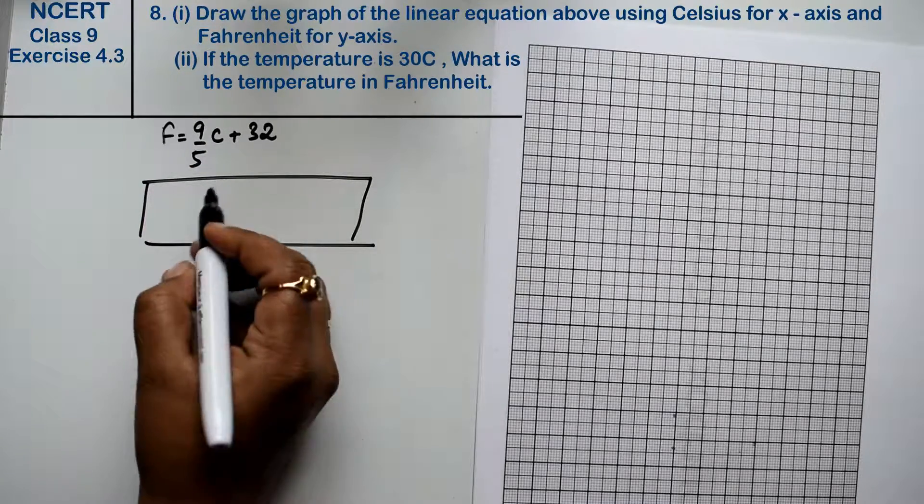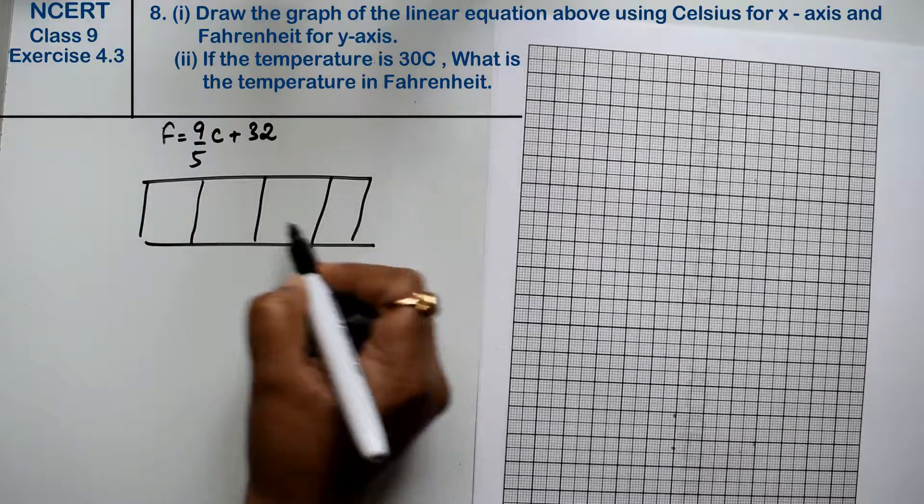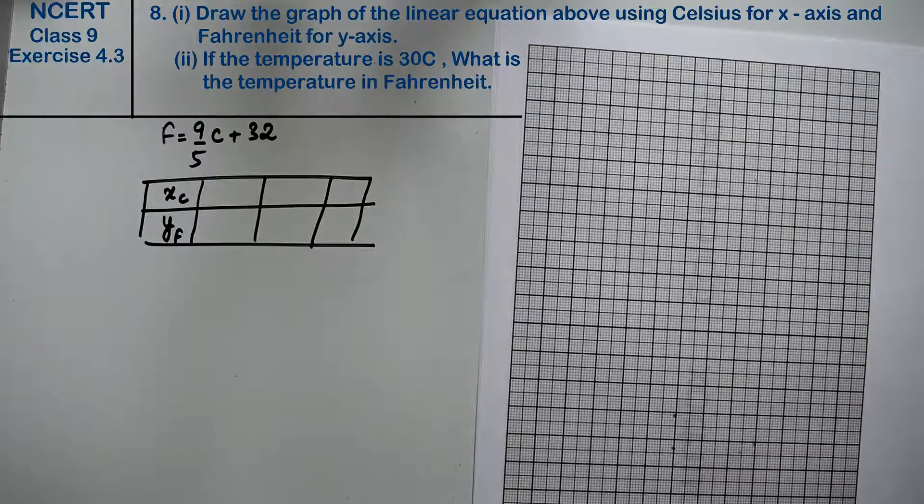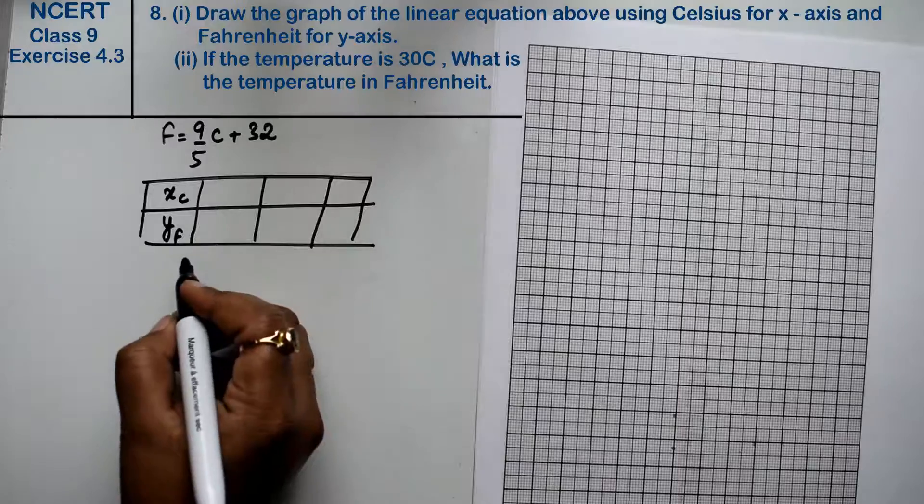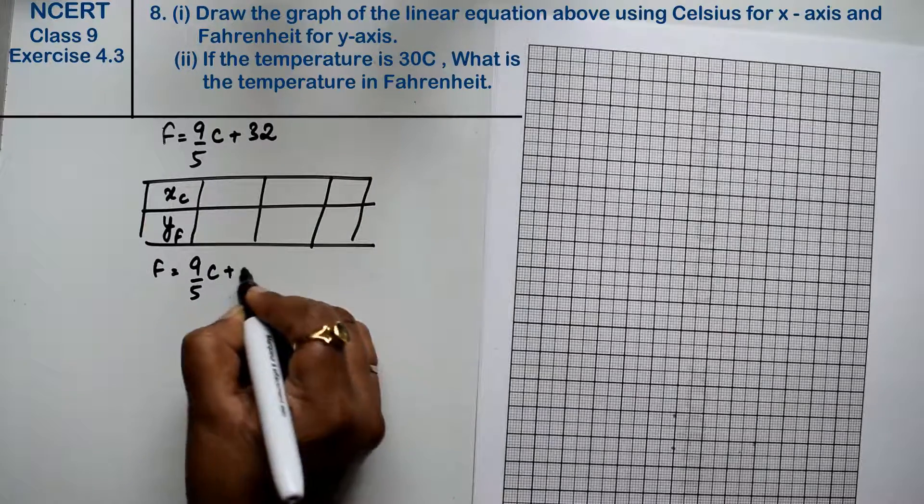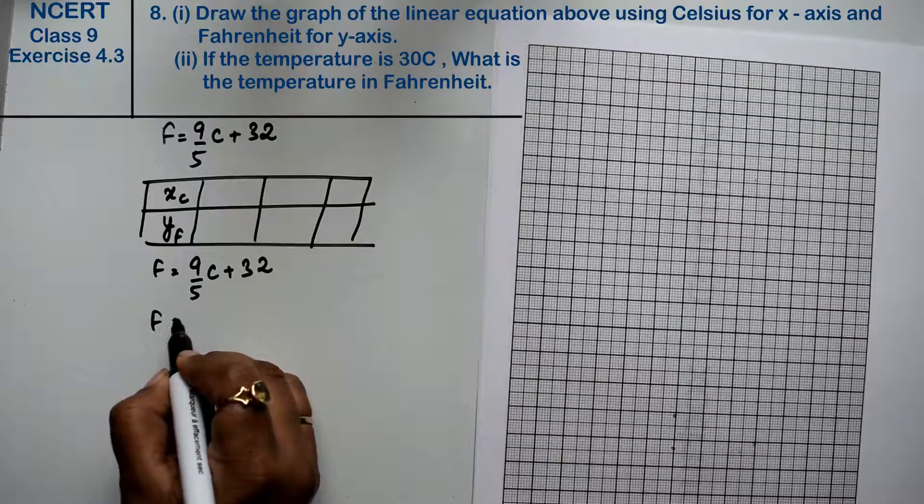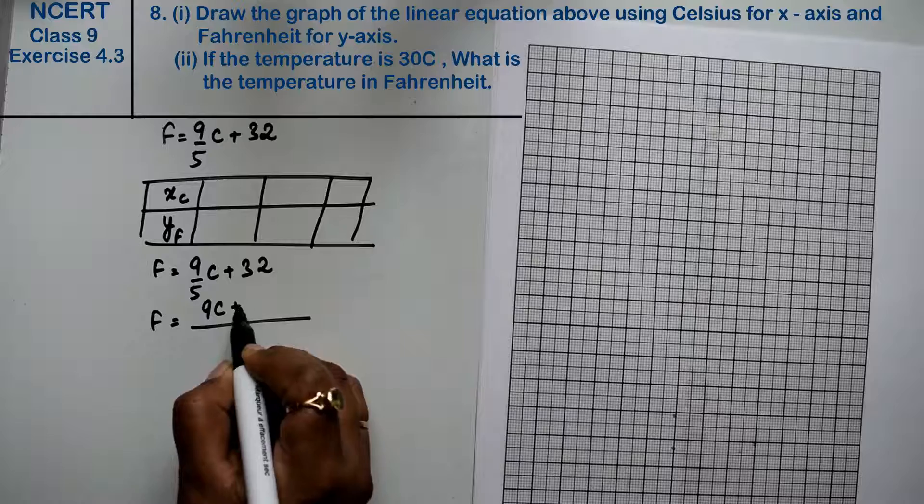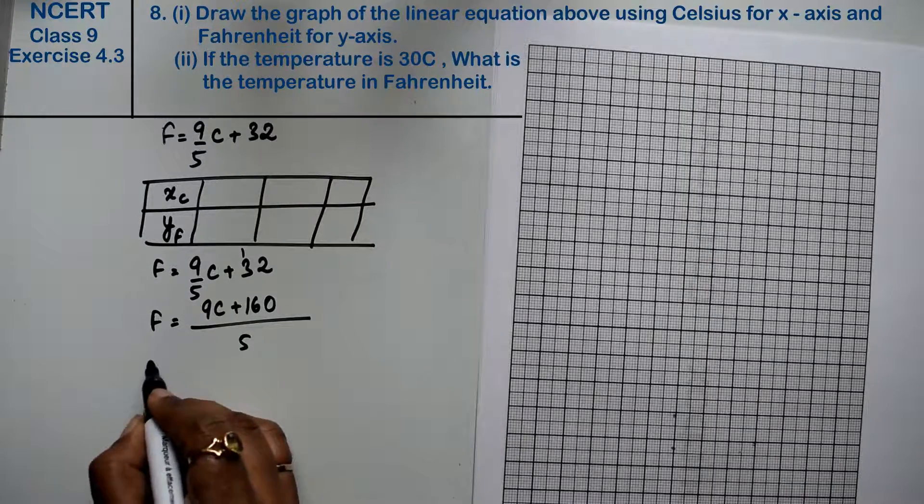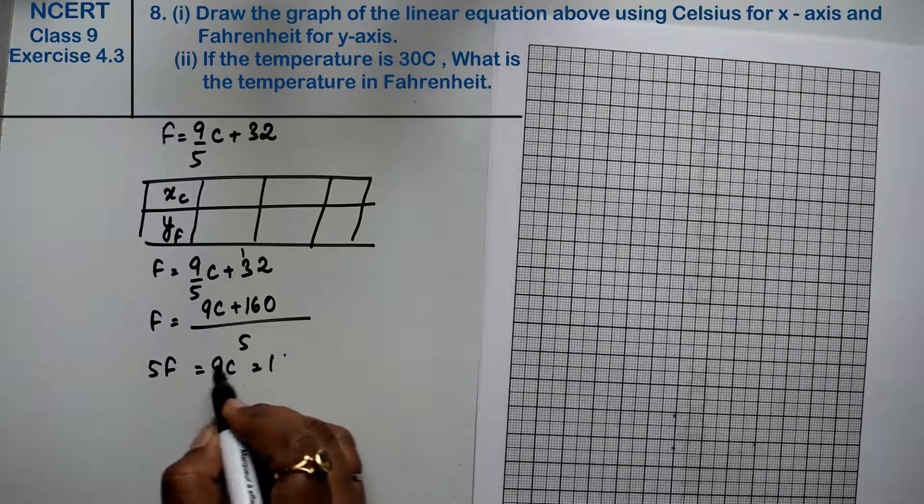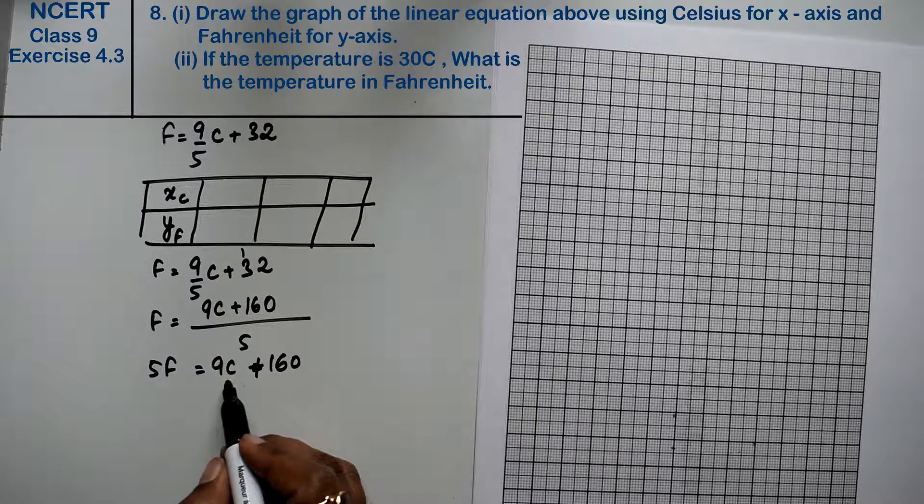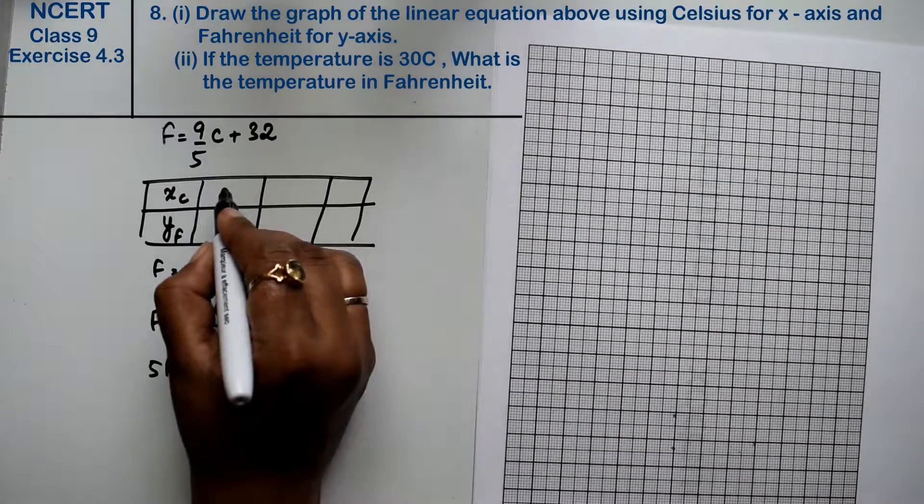So if x is Celsius and y is Fahrenheit, we have to solve this equation and draw the graph. Let's solve the equation first. How much is it? F equals 9 by 5C plus 32. Let's take the table. Taking LCM of 5, this is 9C plus 5 times 32, divided by 5. 5 times 32 is 160.